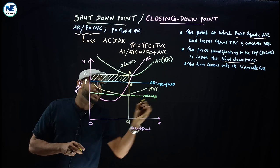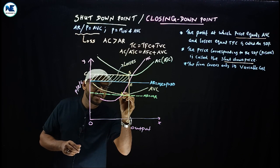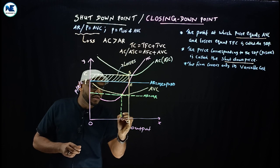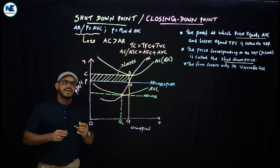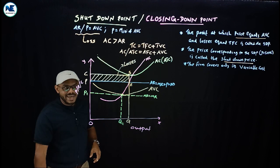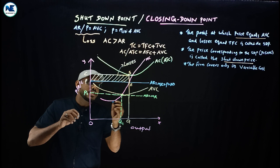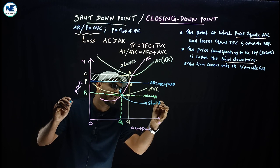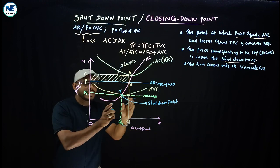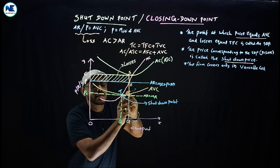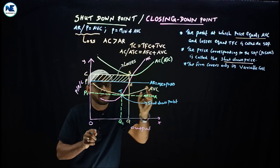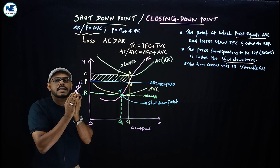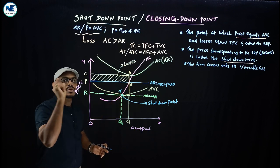Average revenue equals marginal revenue as a horizontal line. We draw a dot line down to the average variable cost minimum point, giving us output Q1 and price P1. At this point — the shutdown point — the firm covers only average variable cost. At Q1 and P1, the firm is just covering its variable cost and nothing more.